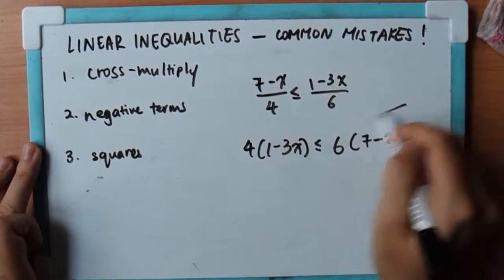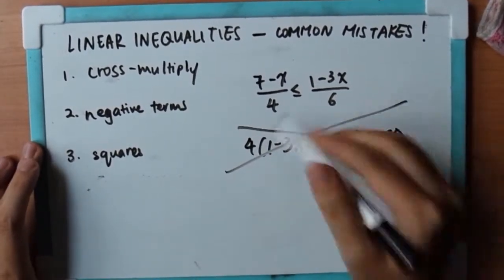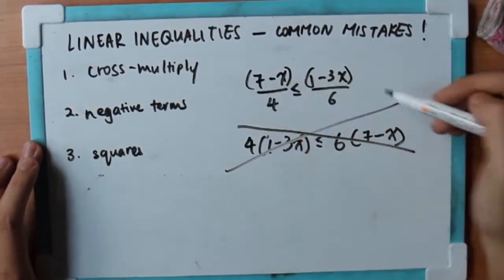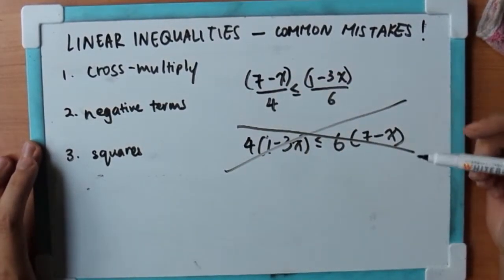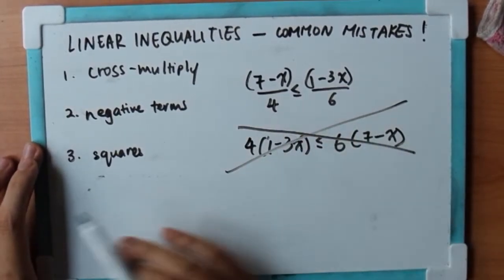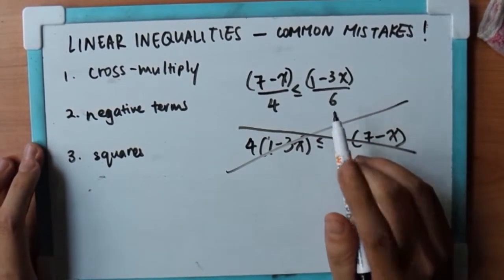And I'm going to tell you this is the wrong answer. So how do you determine which one is the right way? Just remember that the numerator has to stay where it is basically. So 7-x is on the left, it stays on the left. When minus 3x is on the right, it stays on the right. It is the denominator that moves.